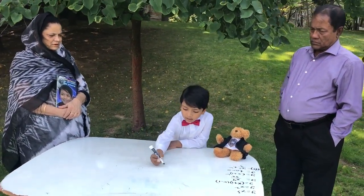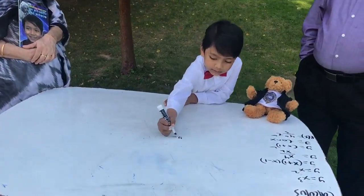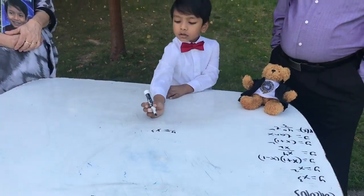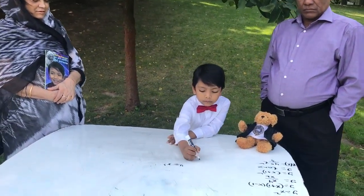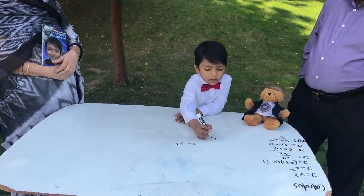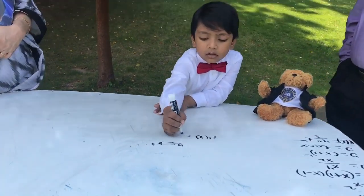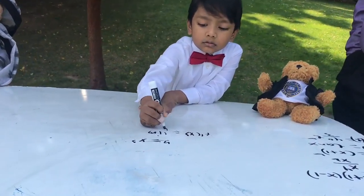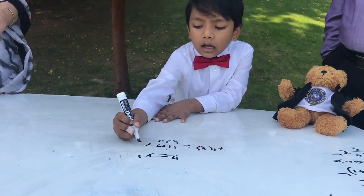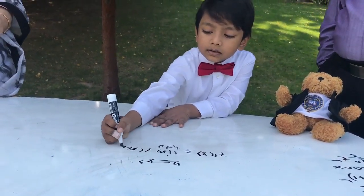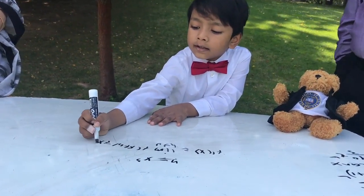So first, y equals x cubed. We'll do this using first principles: f prime of x equals the limit as h goes to 0 of f of x plus h minus f of x, over h.